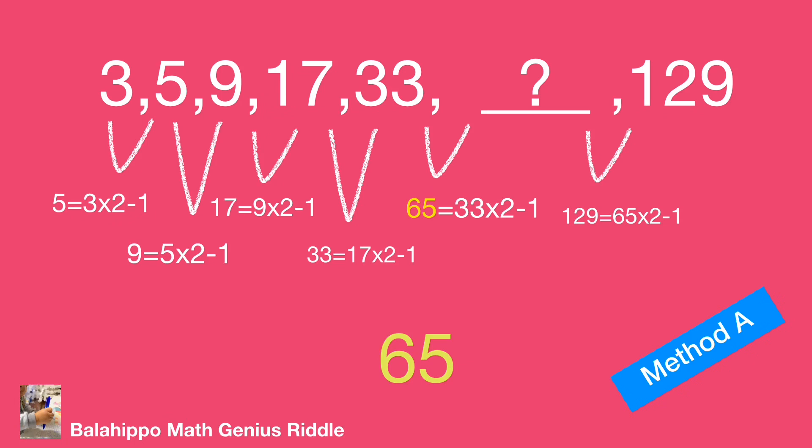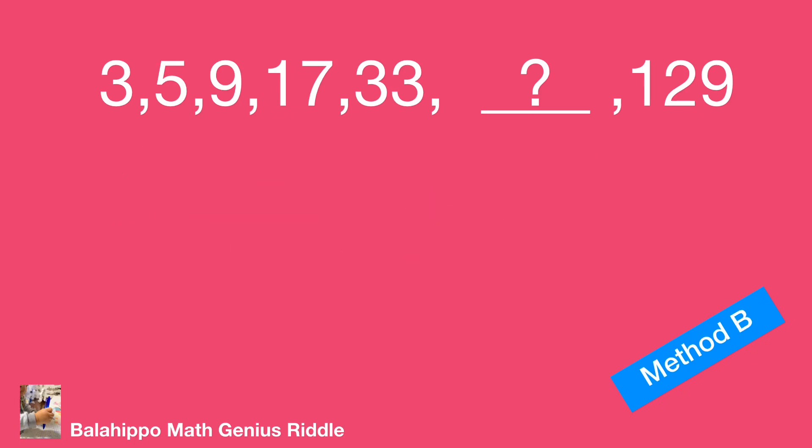Method B, we also find the difference is 2 between 3 and 5. The difference is 4 between 5 and 9. Then, the difference is 8 and 16 in the following numbers.